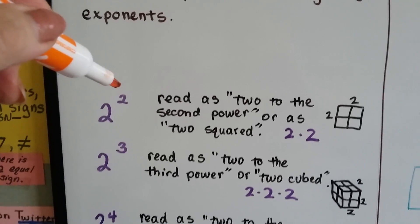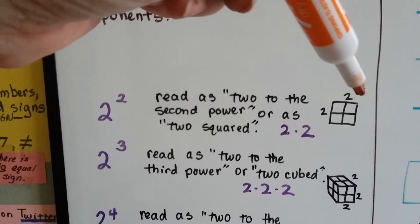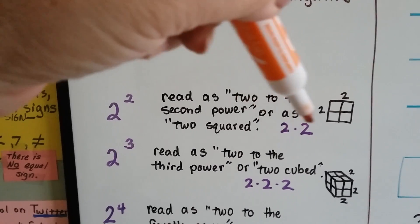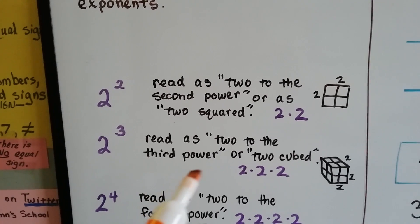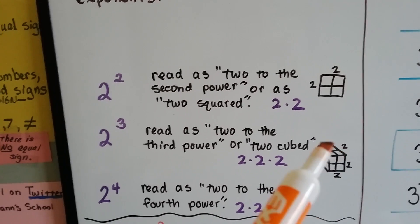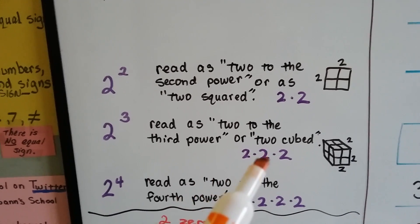2 with a little 2 exponent is read as 2 to the second power, or 2 squared. It makes a square. There's 2 this way and 2 this way. It's 2 times 2. 2 with a little 3 exponent is read as 2 to the third power, or 2 cubed. It would make a cube, because it would be 2 cubes going this way, 2 tall, and 2 wide. 2 times 2 times 2.